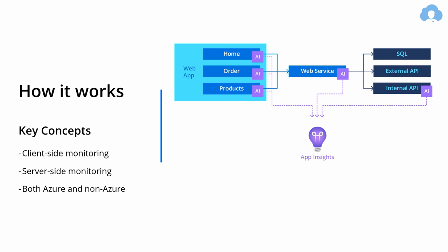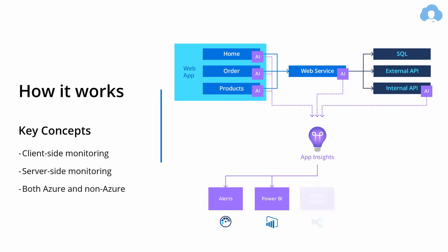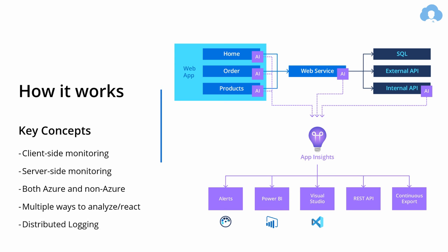Once you have the data inside Application Insights, you can do a lot with it — create alerts, connect with Power BI, Visual Studio, use the REST API, or do continuous export to analyze the logs yourself. You have multiple ways to analyze and react to whatever is happening within your application, and it's one of the best ways to do distributed logging very easily within Azure.